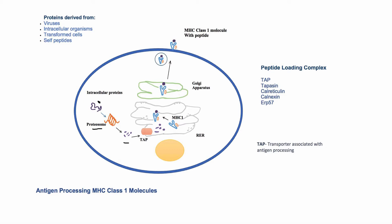These peptides pass to the endoplasmic reticulum through a molecule called TAP. TAP is part of a complex of 7 molecules that form the peptide loading complex. The molecules of this complex help to stabilize HLA class 1 molecules and also help in the translocation and loading of peptides on these molecules.